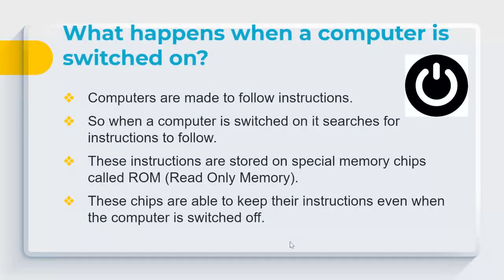What happens when you press the power button? Computers are built to follow instructions. When switched on, the computer searches for instructions stored on special memory chips called ROM — Read-Only Memory. These chips retain instructions even when the computer is off, unlike RAM, which is volatile and loses its contents when power is removed.